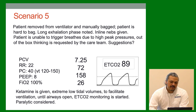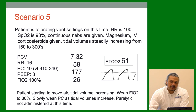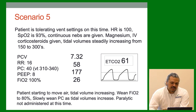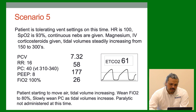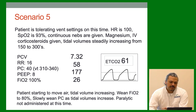Gas: 7.25 / 72 / 158 / 26 — slightly improving. Ketamine is given. Extreme low tidal volumes to facilitate ventilation until airways open. Paralytic considered. Patient is now tolerating the vent, heart rate 100, SAT 93. Nebs and ABG given, mag, steroids. Tidal volumes start to increase to 300. We turn down the rate a little, leave pressure control as tidal volumes are now 300 — airways are starting to open. End-tidal improving to 61. We still have that shark fin because airways are still pretty tight with pressure control of 40.